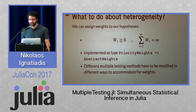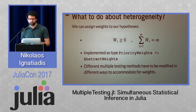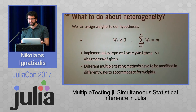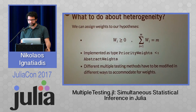So how can we account for this? There's a very general procedure: assign weights. Here I want to highlight some great work in the stats ecosystem that introduced an abstract weights type, recognizing that statisticians use weights often with very different semantics and for lots of different methods. You can subtype abstract weights, and for multiple testing the appropriate type is priority weights. The different multiple testing methods all have to be modified to accommodate weights, and multiple dispatch makes it very easy to do.